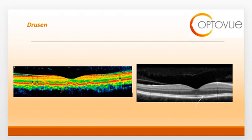On the right-hand side of the slide, you can see an OCT depicting hard drusen. Hard drusen are small with distinct margins. As you can see, hard drusen are barely visible on OCT. However, they can become confluent and result in RPE changes that can lead to exudation.